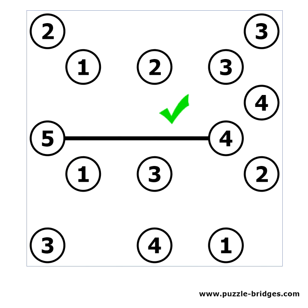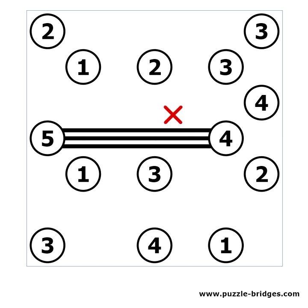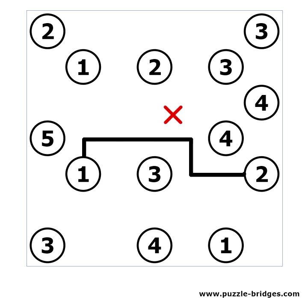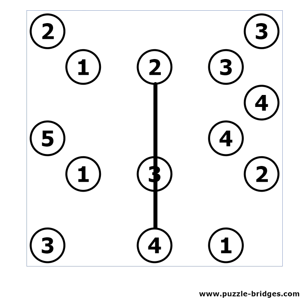You cannot have more than two bridges between each two islands. Bridges travel in a straight line horizontally or vertically. Bridges cannot cross islands. Bridges cannot cross other bridges.